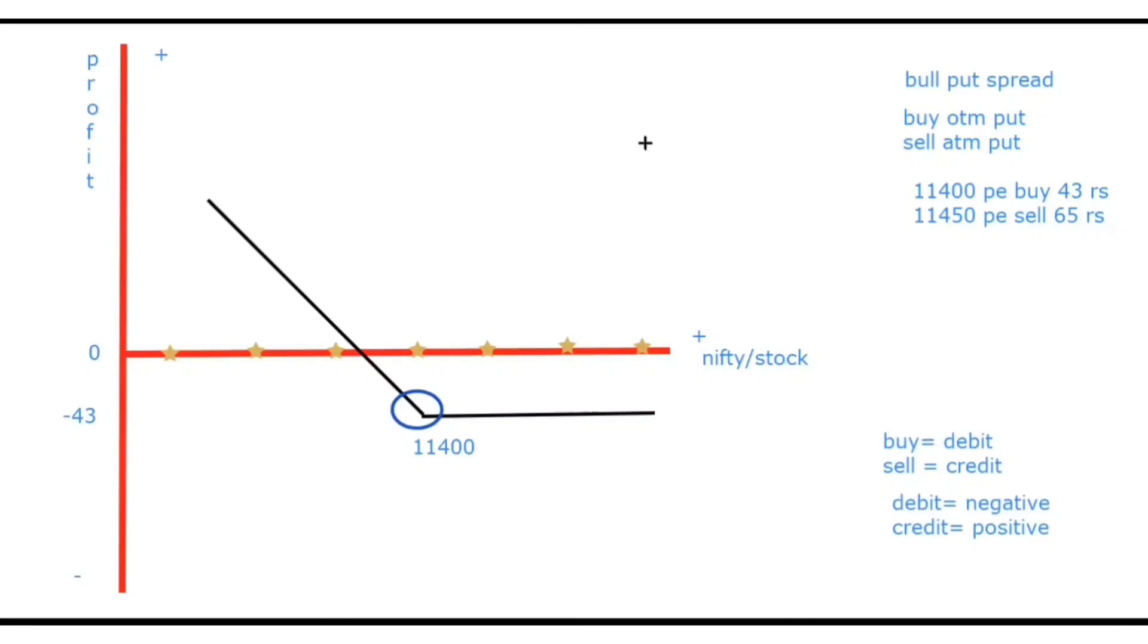So now the second option. 11,450 put sell. Sell means credit. Credit means positive. Positive matlab zero ke upar line banao. 65 rupees. And now jitna market niche jayega, that is jitna market left side jayega, the horizontal line if it goes to the left, then this line would fall. Because you are selling a put option.